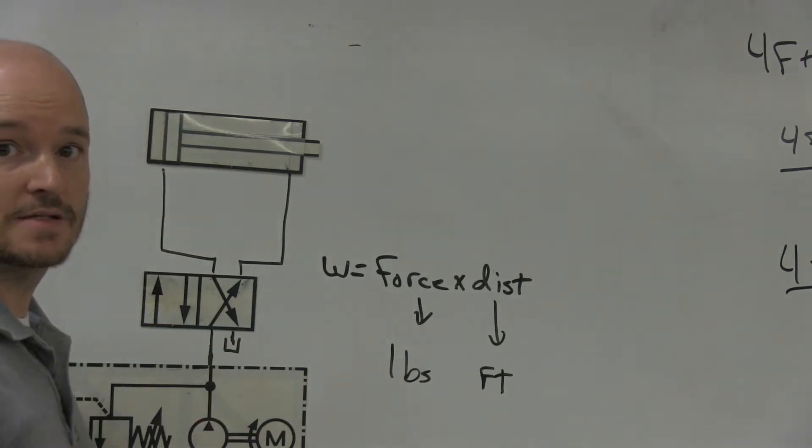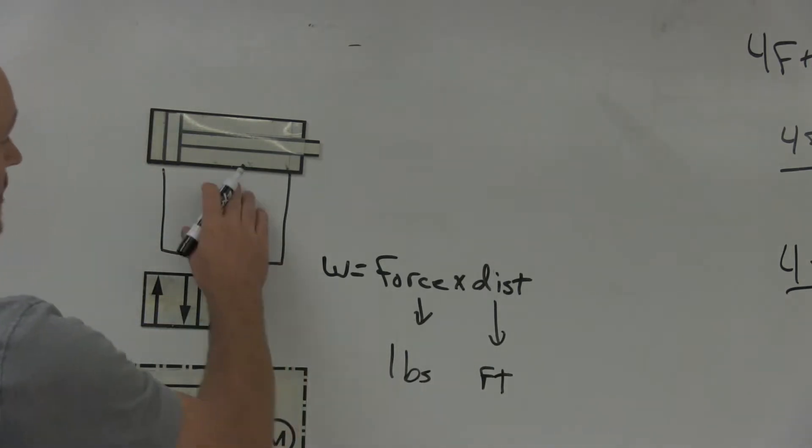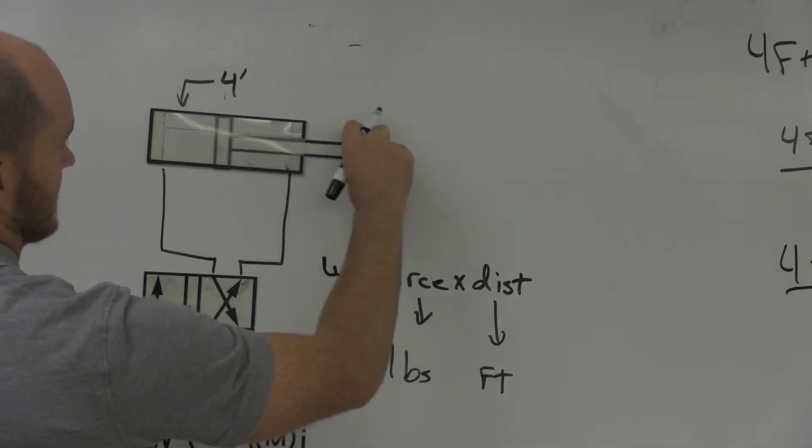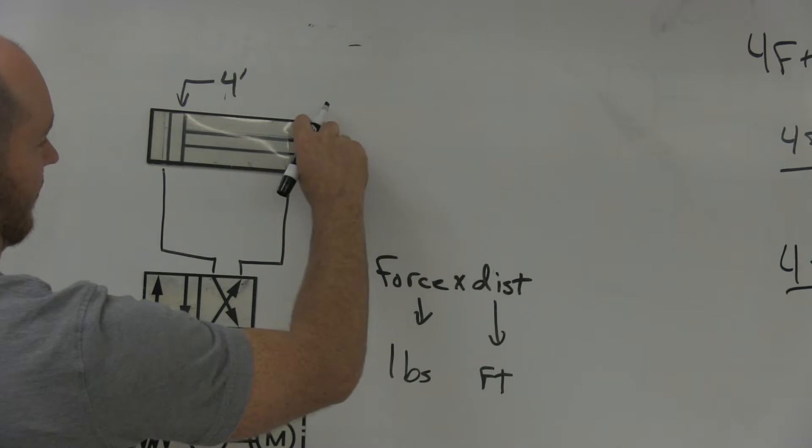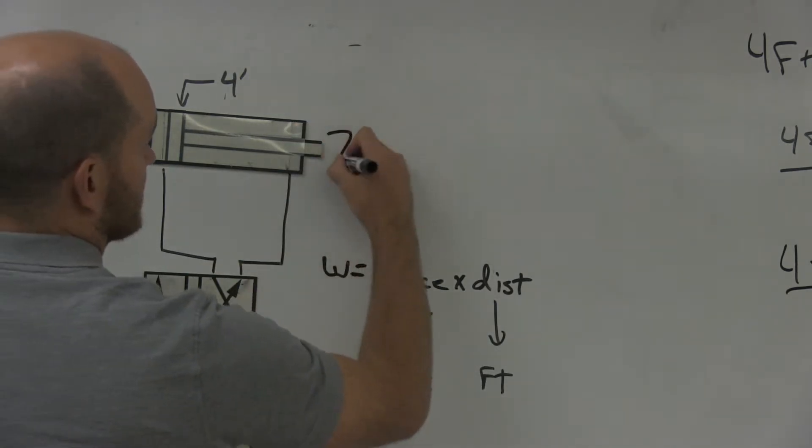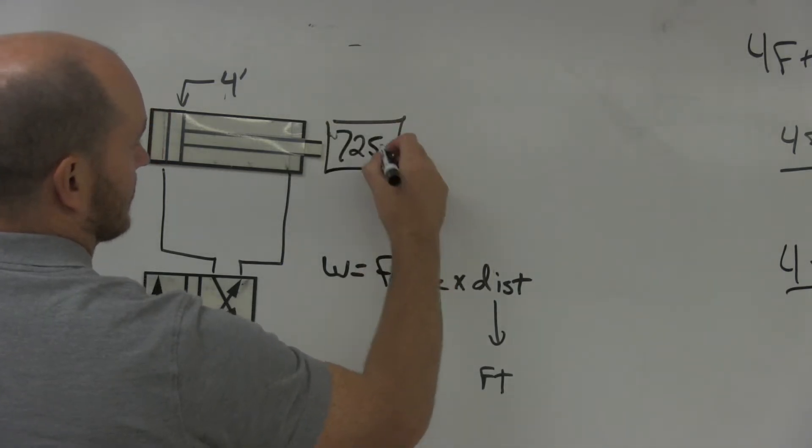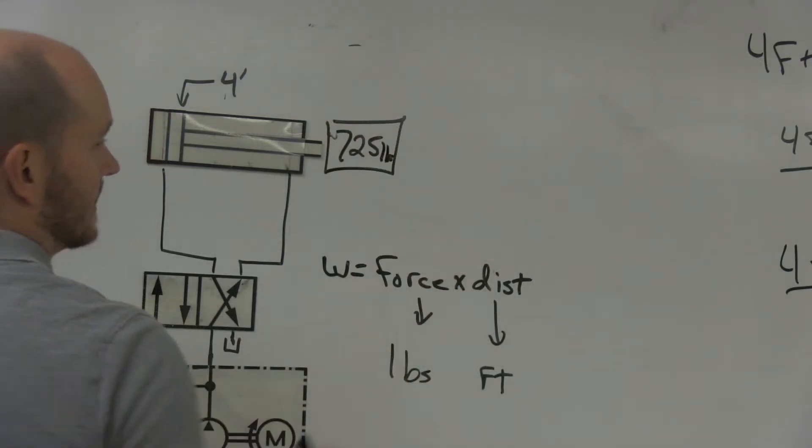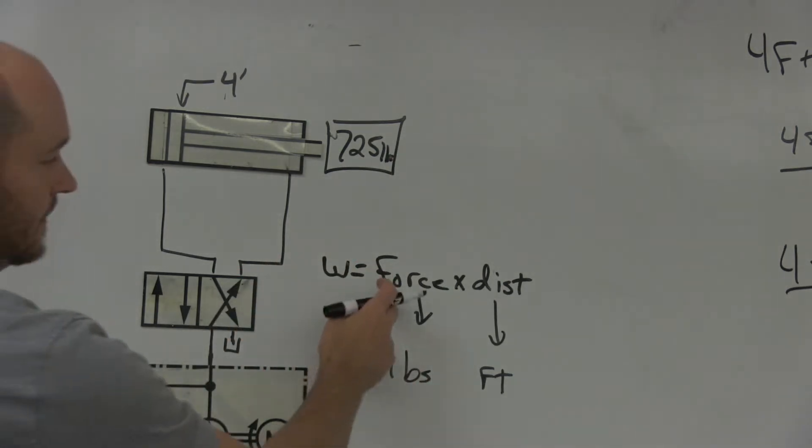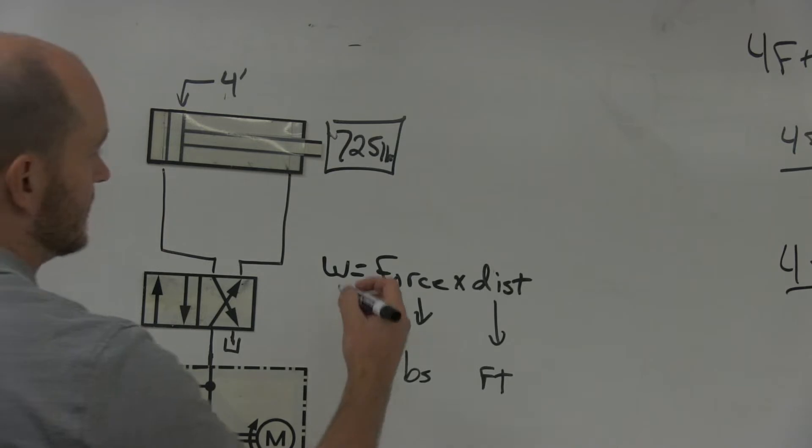Let's say this cylinder has a four-foot stroke, so when it extends, it extends out four feet, and it's moving a 725-pound box just to make the example simple. That's how much force is required.